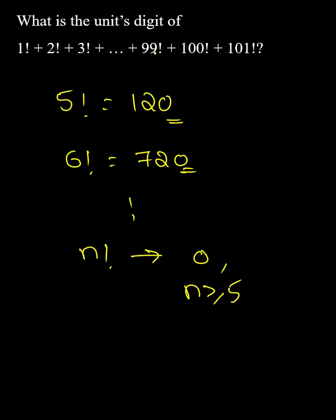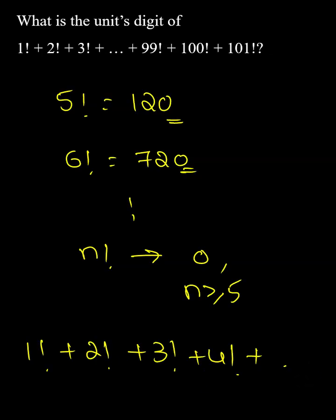Therefore, we only need to calculate 1! + 2! + 3! + 4!, since all remaining factorials have unit's digit 0. So: 1! = 1, 2! = 2, 3! = 6, 4! = 24 (unit's digit is 4). Solving, we get unit's digit as 3.